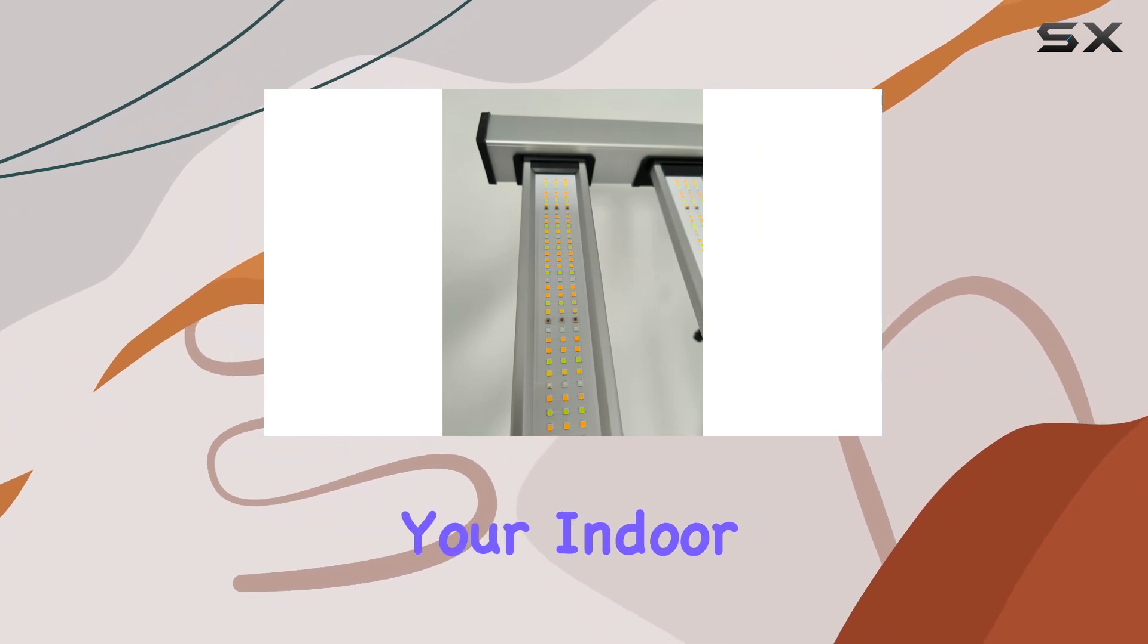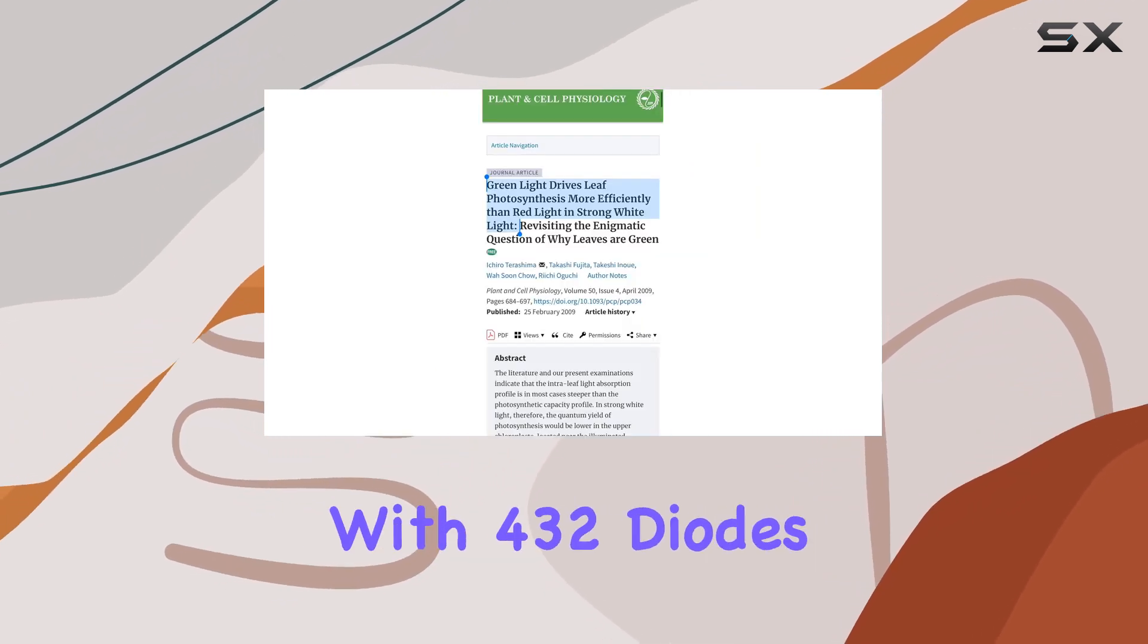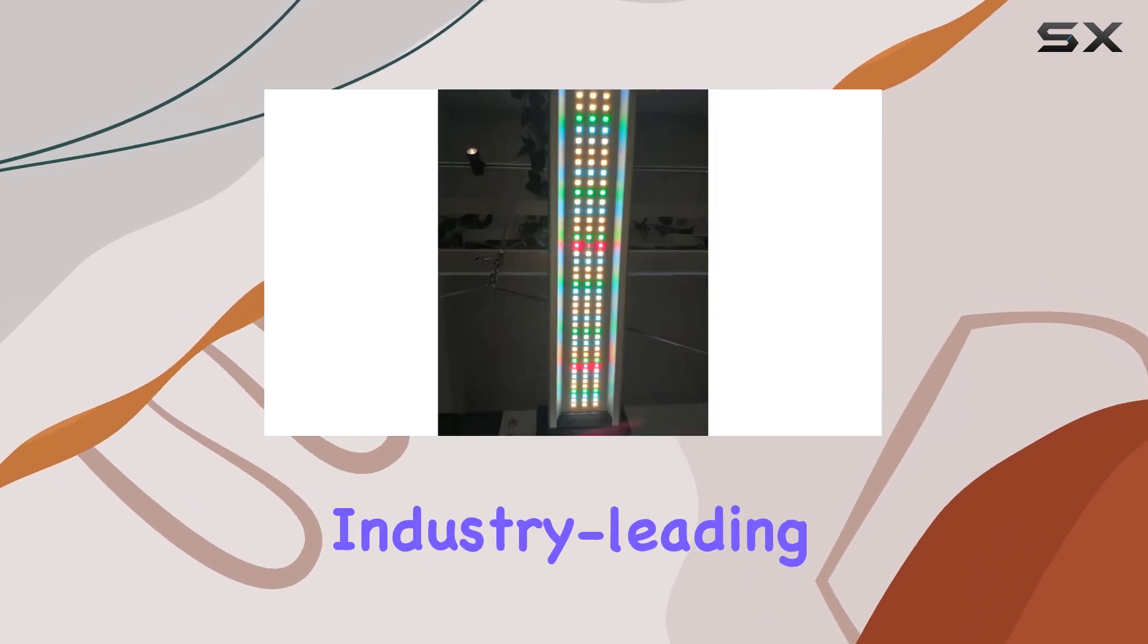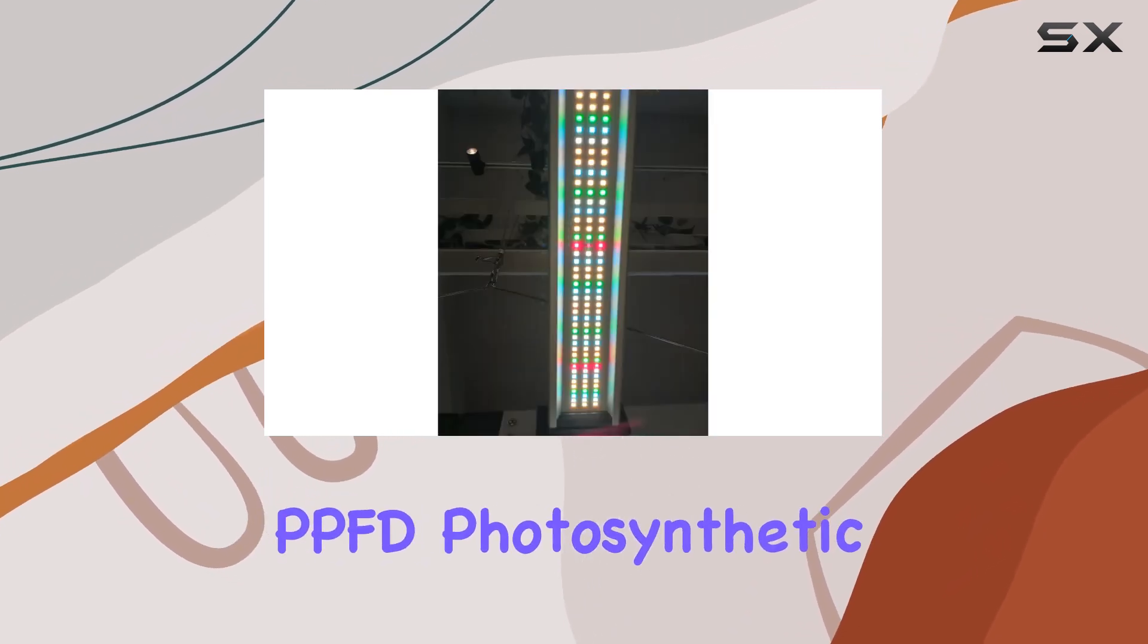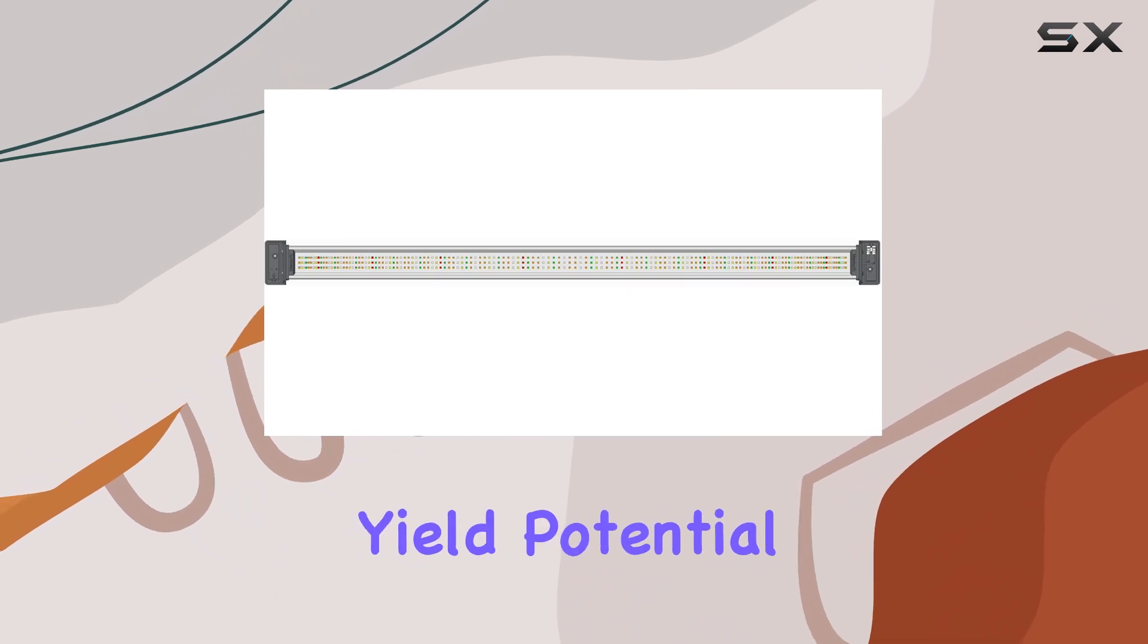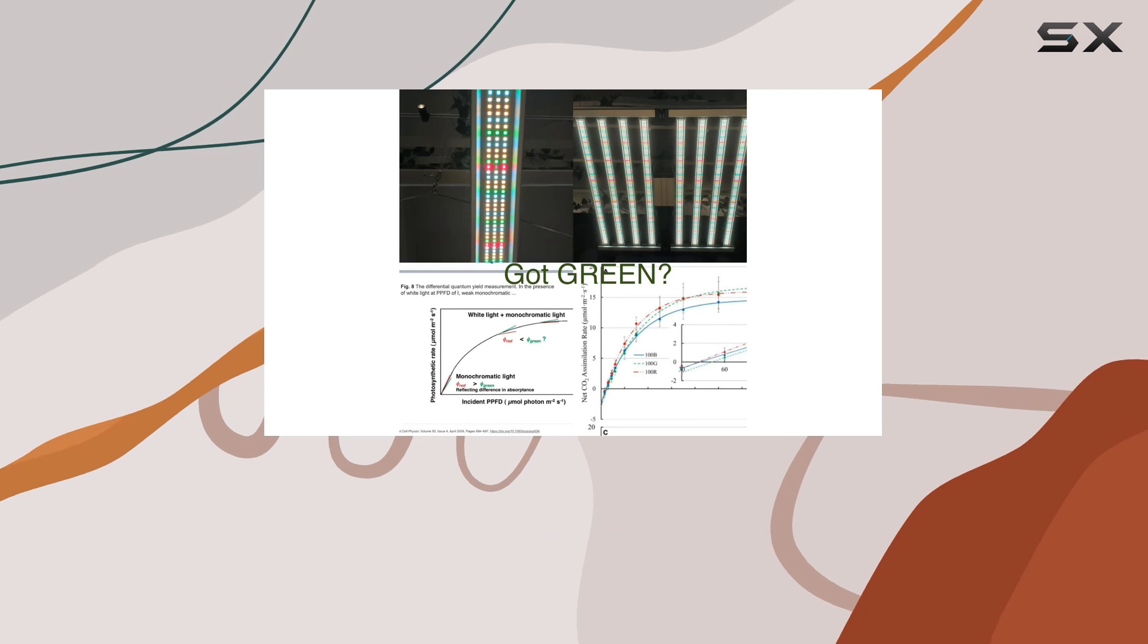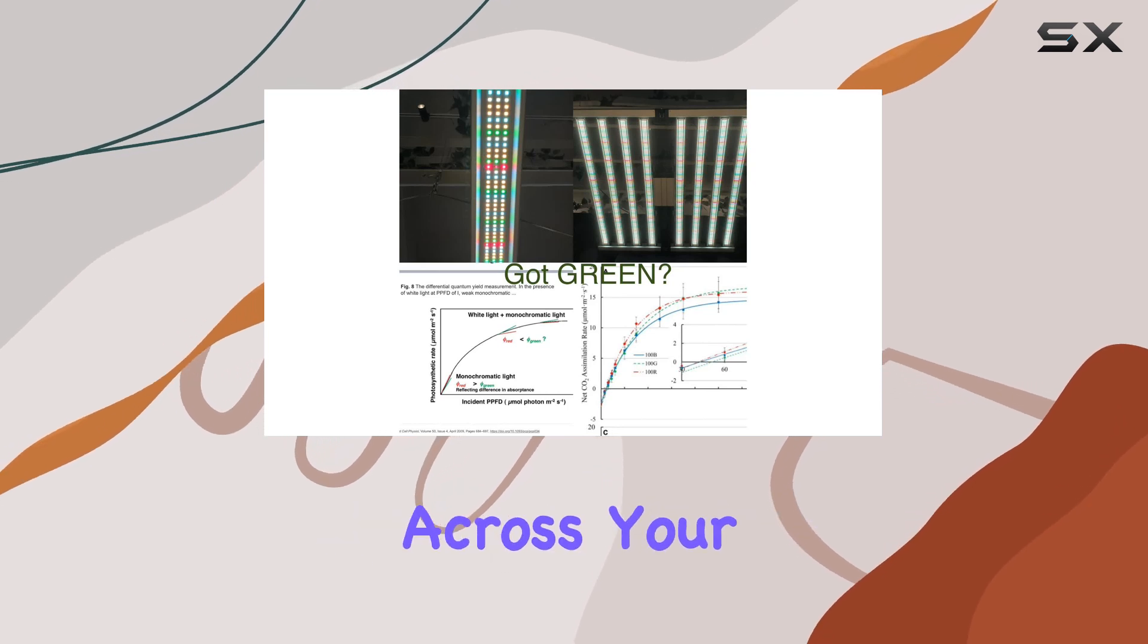With 432 diodes per bar, this light delivers industry-leading PPFD (photosynthetic photon flux density) and yield potential. The smart diode spacing and strategically designed bars ensure uniform light distribution across your canopy, promoting healthier plant growth and minimizing shadowing.